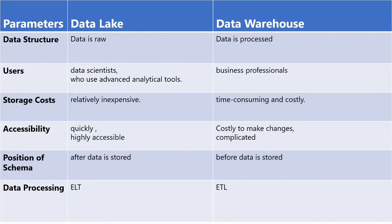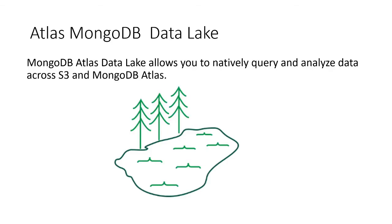For data processing, a data lake uses ELT — Extract, Load, and Transform — while a data warehouse uses ETL — Extract, Transform, and Load. MongoDB Data Lake is MongoDB's solution for querying data stored in low-cost AWS S3 buckets using the MongoDB Query Language. It allows analytic applications to make use of archived data for all data processing needs. Using MongoDB, you can query data stored in JSON, CSV, or many other data types using MongoDB Shell, MongoDB Compass, or any other MongoDB driver or command line, without any data movement or transformation.